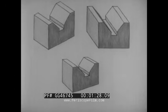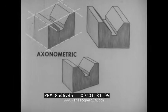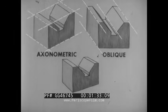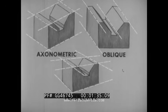In pictorial sketching, the three methods used are axonometric, oblique, and perspective.